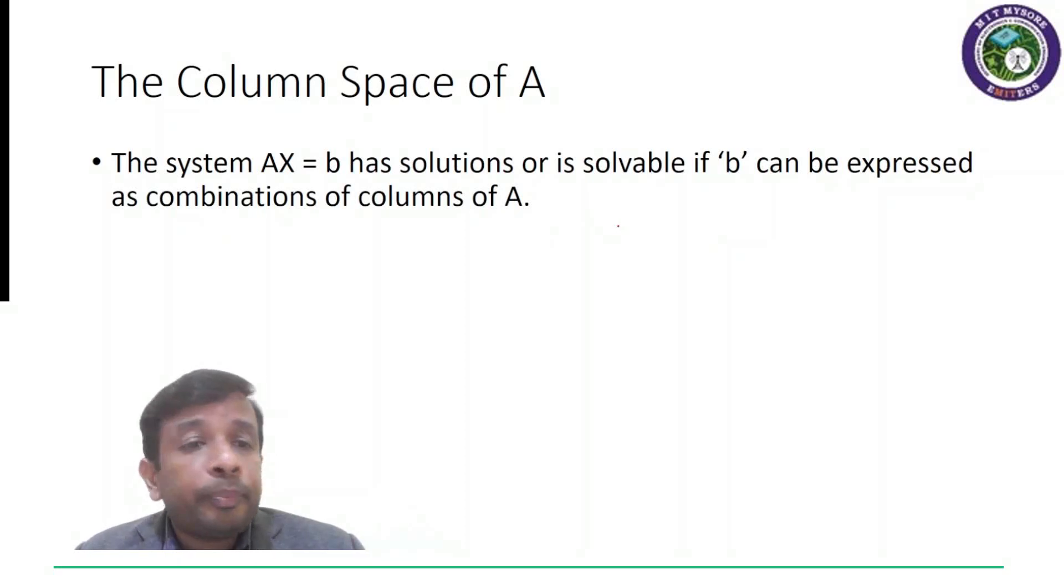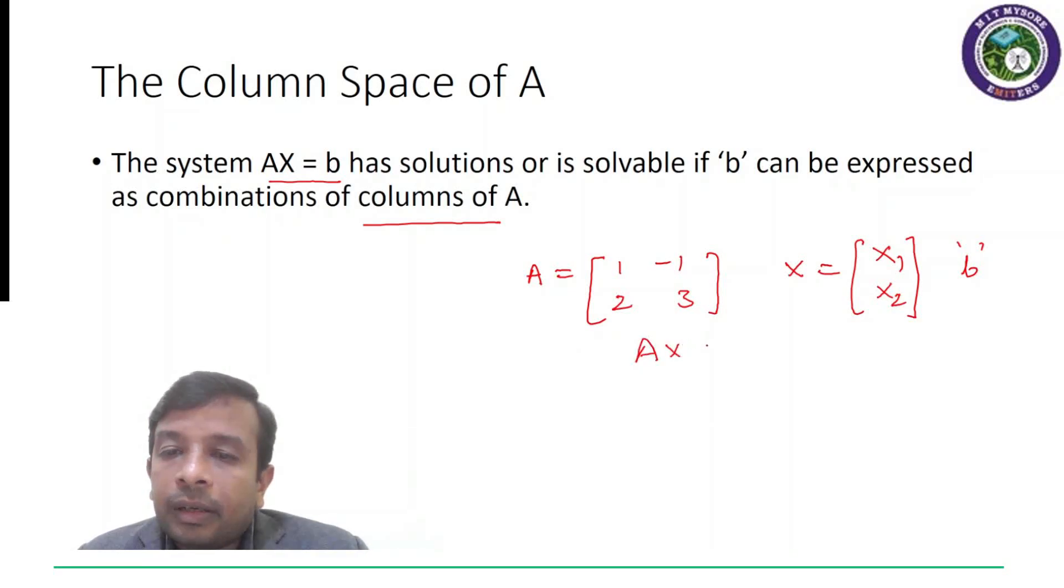The column space of A is the set of combinations of columns of A for the system AX equal to B. That is, for example, if I consider 2 by 2 matrix 1, 2, minus 1 and 3 and considering X1 and X2 to be the variables, and B being the solution side or the right hand side, so we say for the system AX equal to B, if we can express